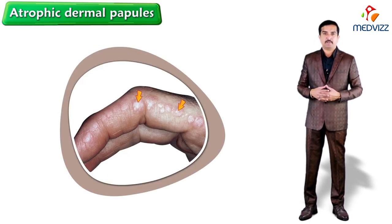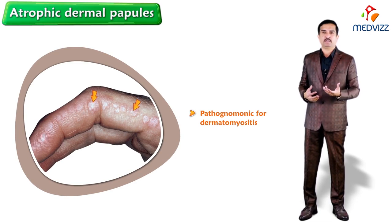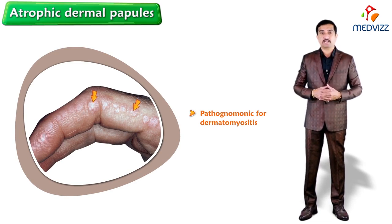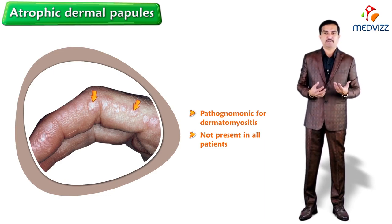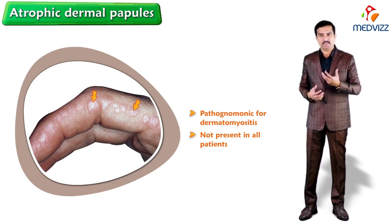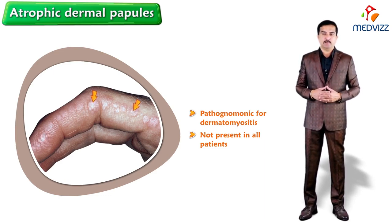Atrophic dermal papules are said to be pathognomonic for dermatomyositis, but however they are not present in all patients with this disease. This is what we need to know about Gottron's Papules.